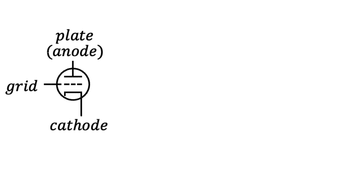In the beginning, there was the vacuum tube triode, a three-terminal device with a plate, a grid, and a cathode, which people would characterize by the voltage between the grid and the cathode.